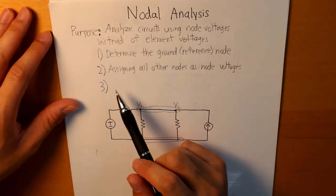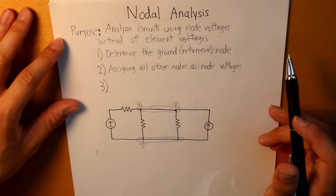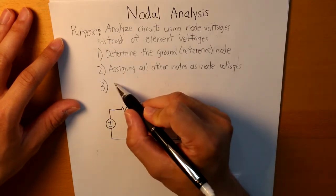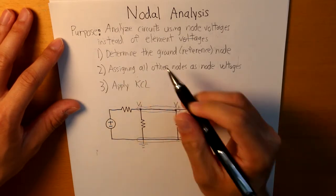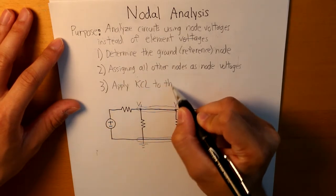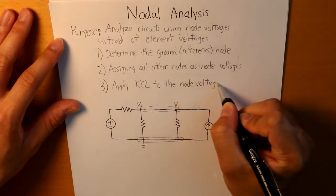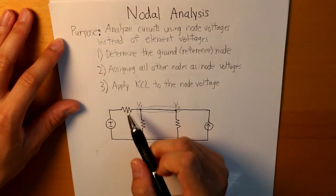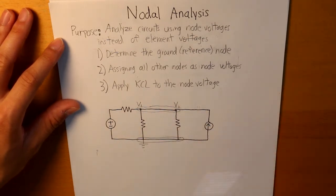And then the last step is to apply KCL to the node voltage. And that would essentially be all the currents entering and leaving V1 and V2, because V1 and V2 are the node voltage.